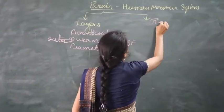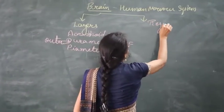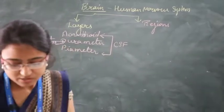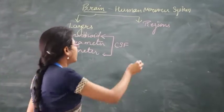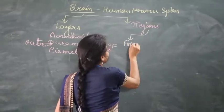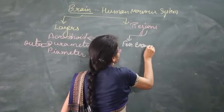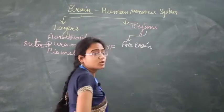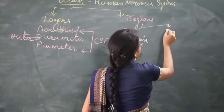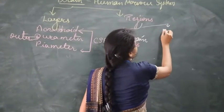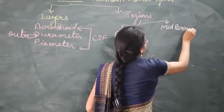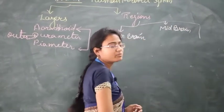The brain is divided into three parts. The first is the forebrain, which is the most prominent and largest part of the brain. The smallest part is the midbrain, and the last part is known as the hindbrain.